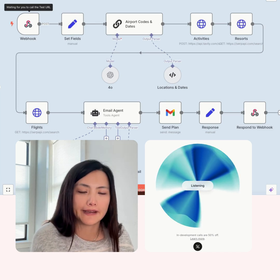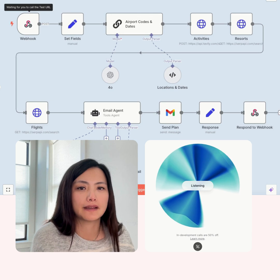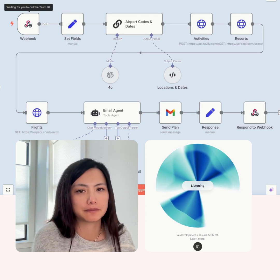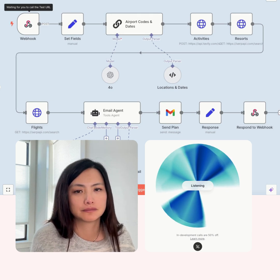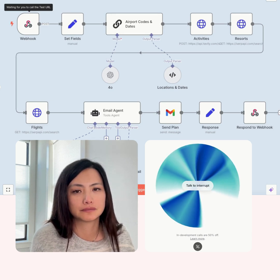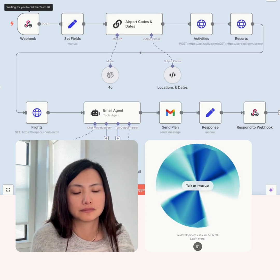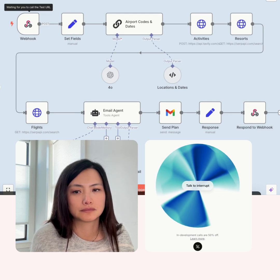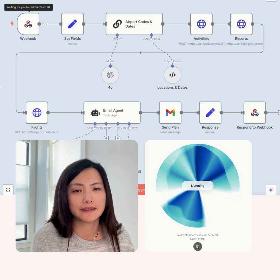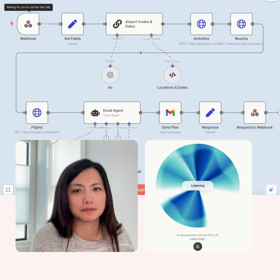I say: I would like to go to Legoland and also museums. The agent confirms those activities, then asks: What is your email address so I can send you the travel plan? I provide my email: hysumminchen at gmail.com.